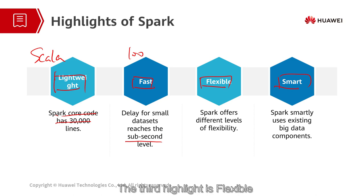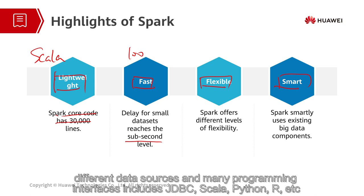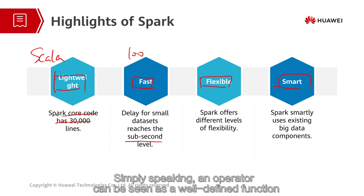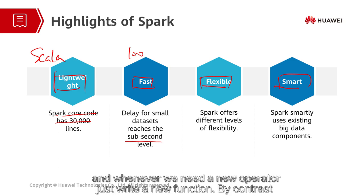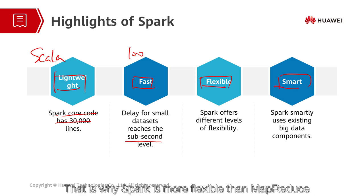The third highlight is flexible. Spark provides flexibility at different levels. For example, Spark supports new data operators, different data sources, and many programming interfaces, which includes JDBC, Scala, Python, R, etc. Besides, written in Scala, Spark allows new computation operators to be implemented. Simply speaking, an operator can be seen as a well-defined function. And whenever we need a new operator, just write a new function. By contrast, in MapReduce, there are just two operators, Map and Reduce. That is why we say Spark is more flexible than MapReduce.